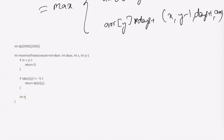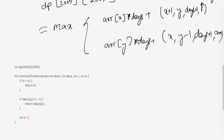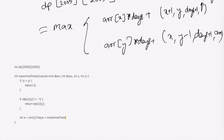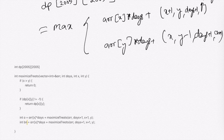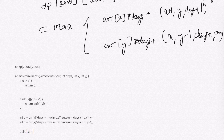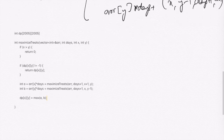We define variable a as the choice where we take the left element: a = array[x] × days + maximizeTreats(array, days+1, x+1, y). Similarly, variable b is the choice where we take the right element: b = array[y] × days + maximizeTreats(array, days+1, x, y-1).